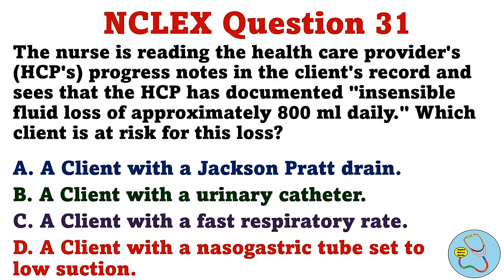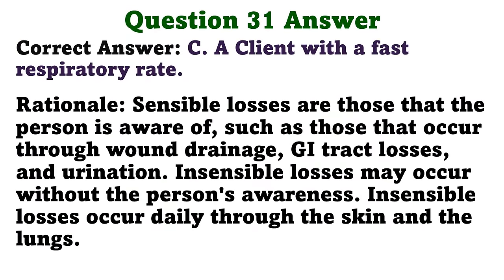The nurse is reading the healthcare provider's progress notes and sees that the HCP has documented insensible fluid loss of approximately 800 mL daily. Which client is at risk for this loss? A. A client with a Jackson-Pratt drain. B. A client with a urinary catheter. C. A client with a fast respiratory rate. D. A client with a nasogastric tube set to low suction. The correct answer is C: a client with a fast respiratory rate. Sensible losses are those that the person is aware of, such as those that occur through wound drainage, GI tract losses, and urination. Insensible losses may occur without the person's awareness. Insensible losses occur daily through the skin and the lungs.